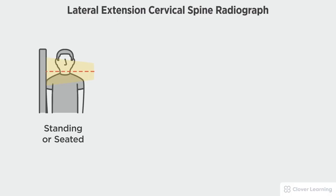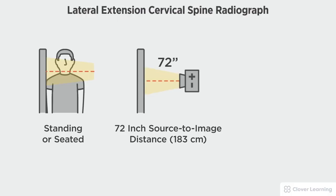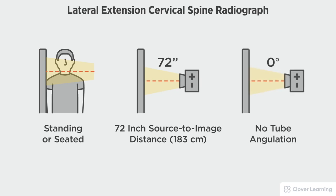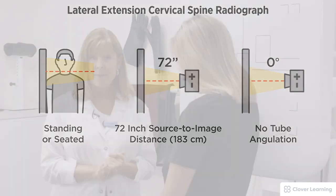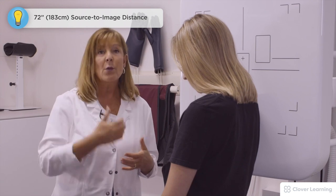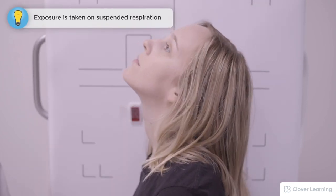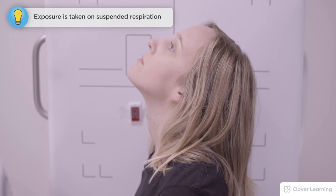In this view we will be demonstrating the lateral extension cervical spine. The lateral extension cervical spine should be performed with the patient standing or seated at the upright Bucky, a 72-inch source to image distance, and no tube angulation. When we lift the chin all the way up for extension, it closes those spaces — for extension, she's going to raise her chin to the ceiling.